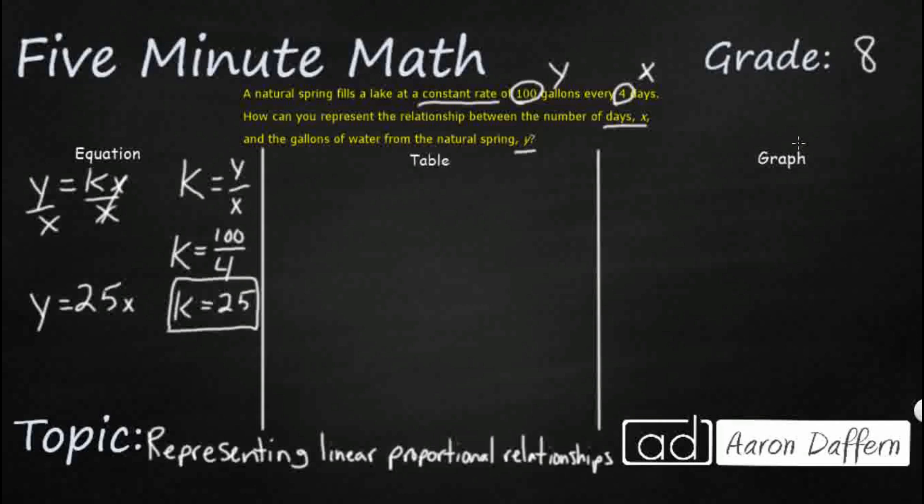If we wanted to make this a table, we could just make some pretty simple x, y values. And so let's just go ahead and do 1, 2, 3, 4. They already give us the 4. Let's fill that up with 5. They might want you to go into larger values, like 10 days, 20 days, but really it's just times 25.